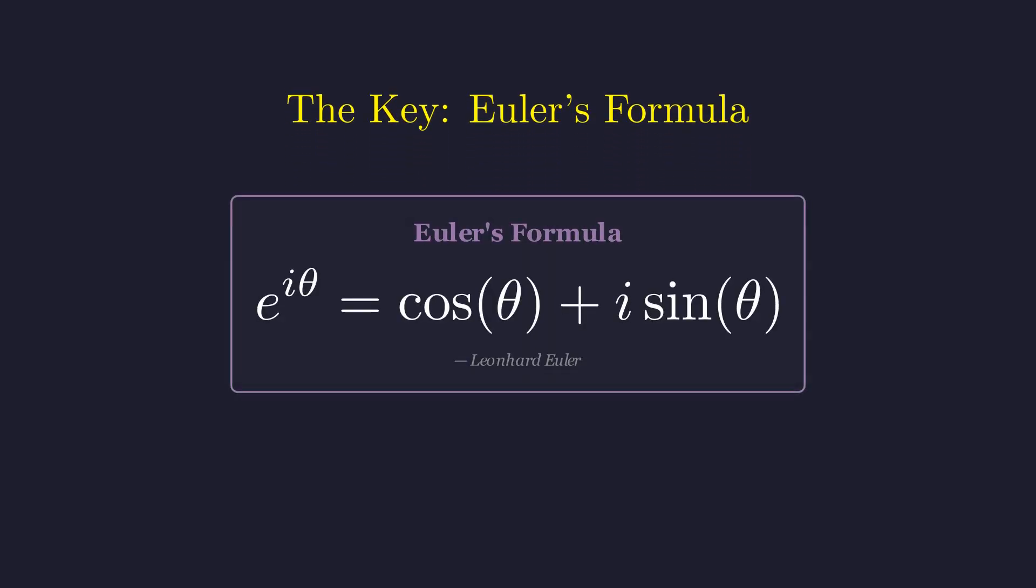e to the power of i theta equals cosine theta plus i times sine theta. This elegant equation bridges the exponential function with trigonometry, describing every point on the unit circle in the complex plane.